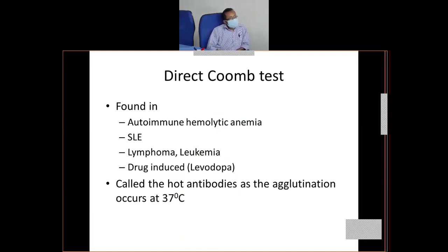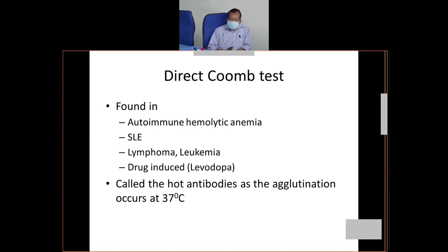Direct Coombs test — that is IgG mediated. You will find it mostly in autoimmune hemolytic anemia, SLE, lymphoma, leukemia. These are hot antibodies because they are IgG mediated and very effective at 37 degrees centigrade. The hemolysis will occur at 37 degrees centigrade — that is why they are known as hot antibodies.